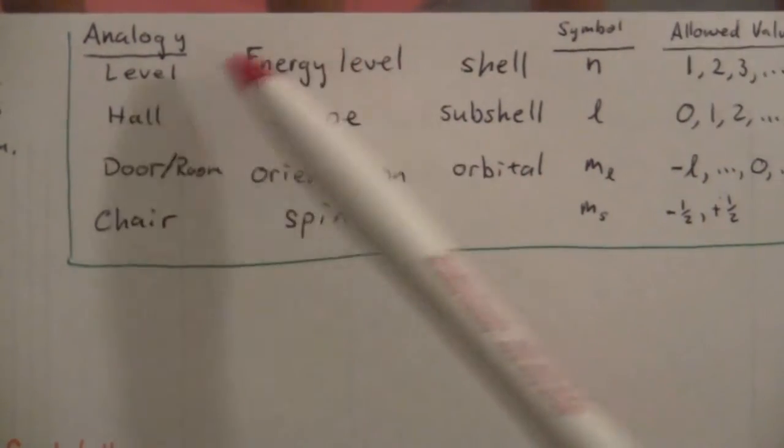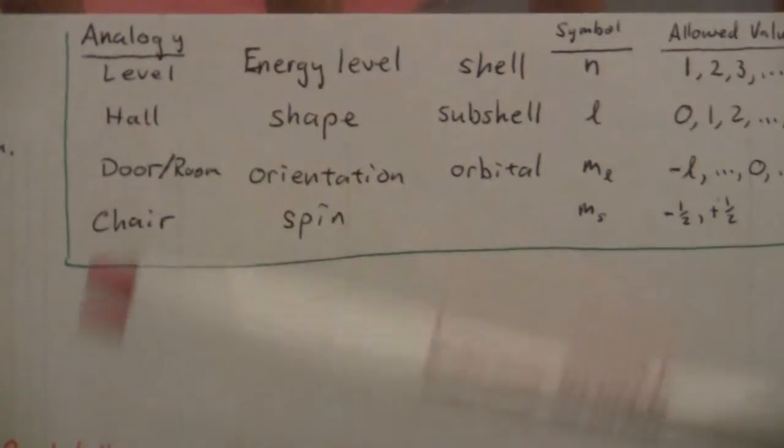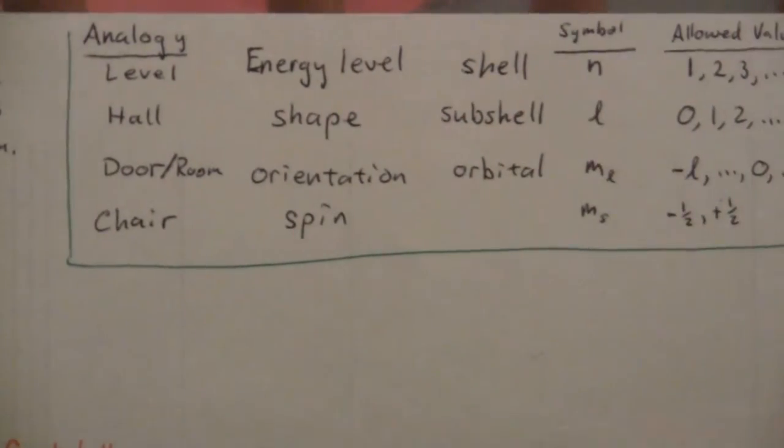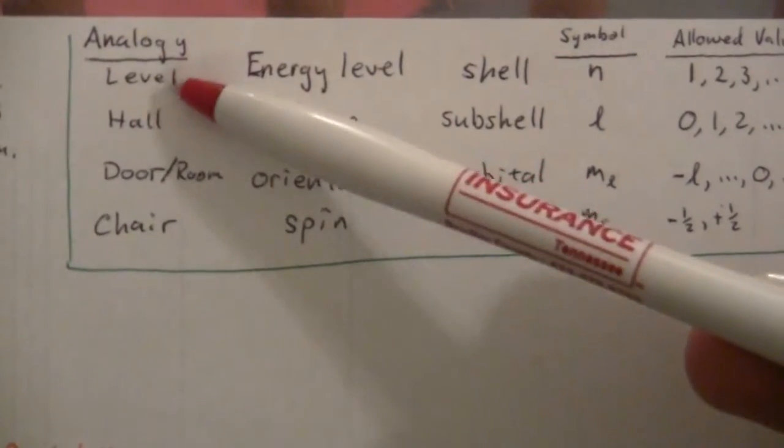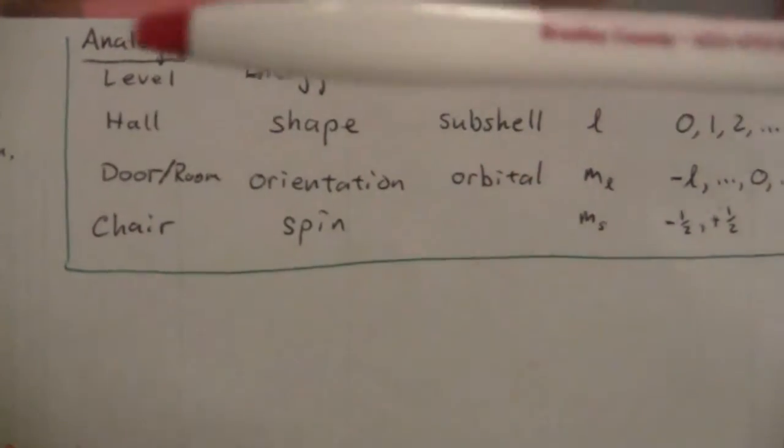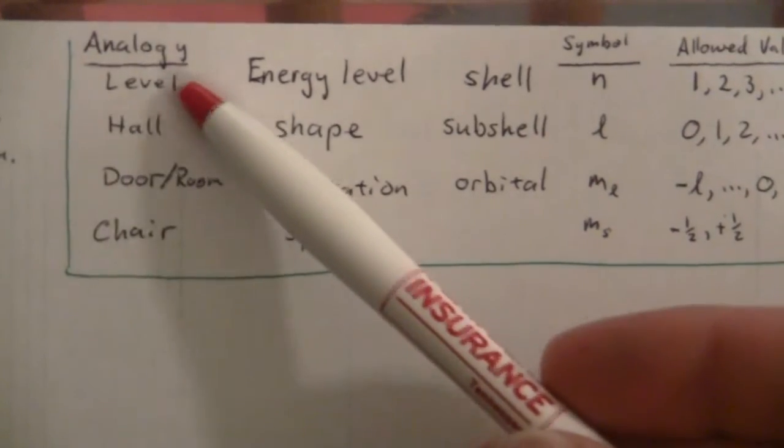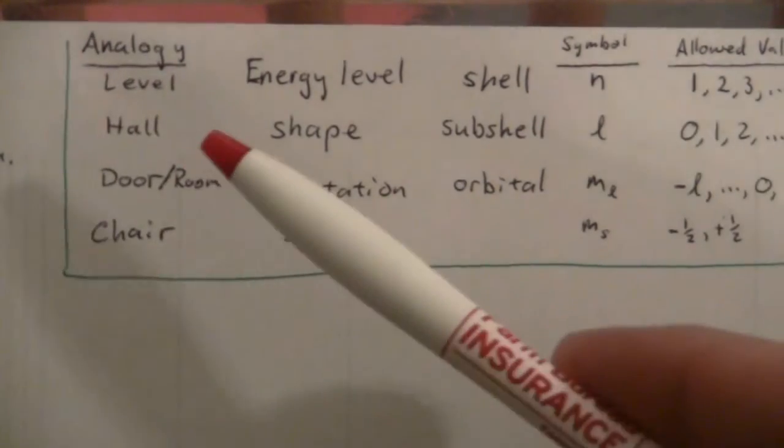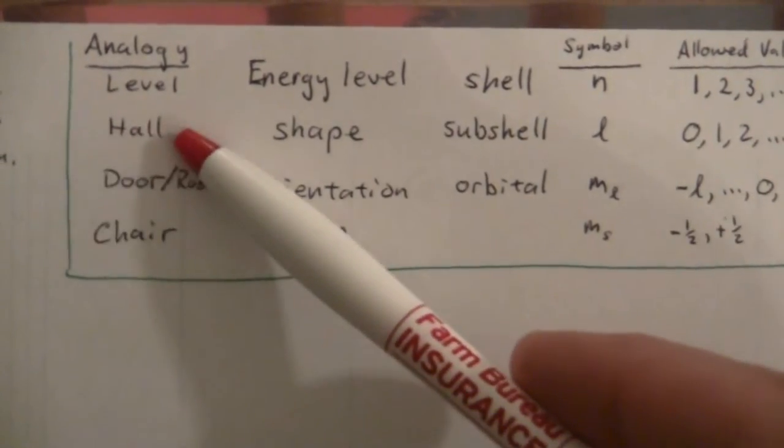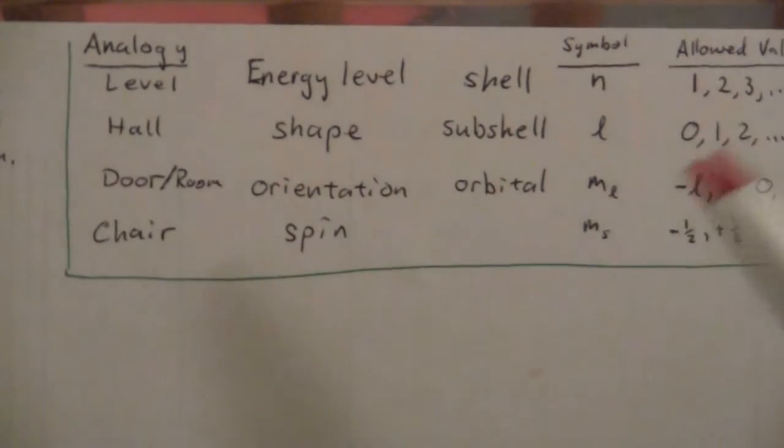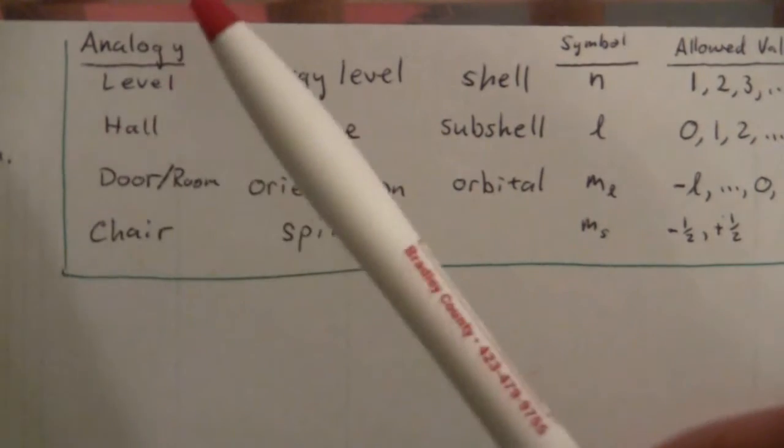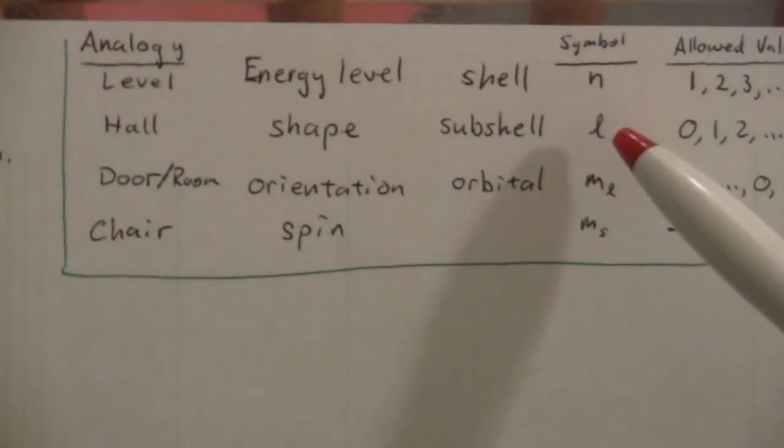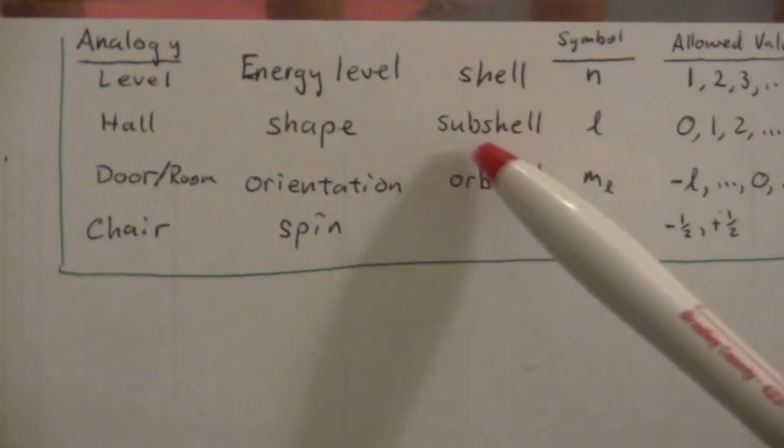The energy level is essentially the same. It's what level we're looking at, kind of like a building, a multi-story building. This is the level. Each floor has its own level or own value for N. And then each floor has a certain number of hallways. That represents the values for L or the sub-shells.